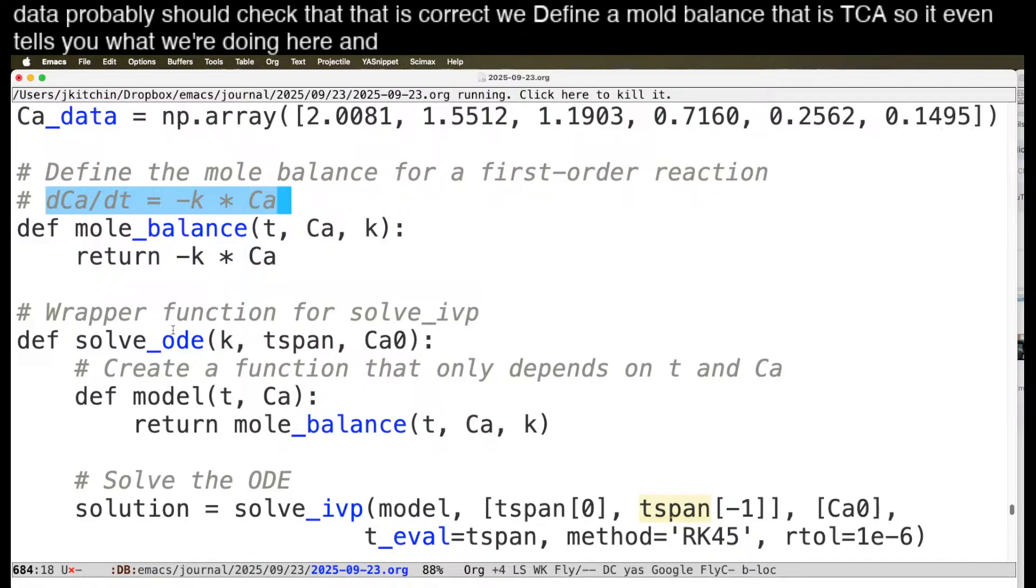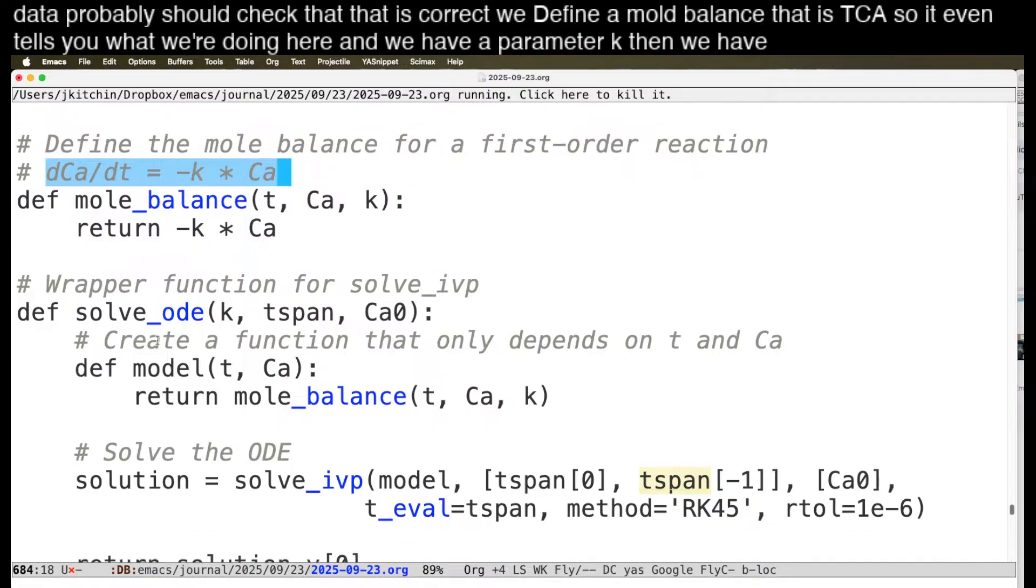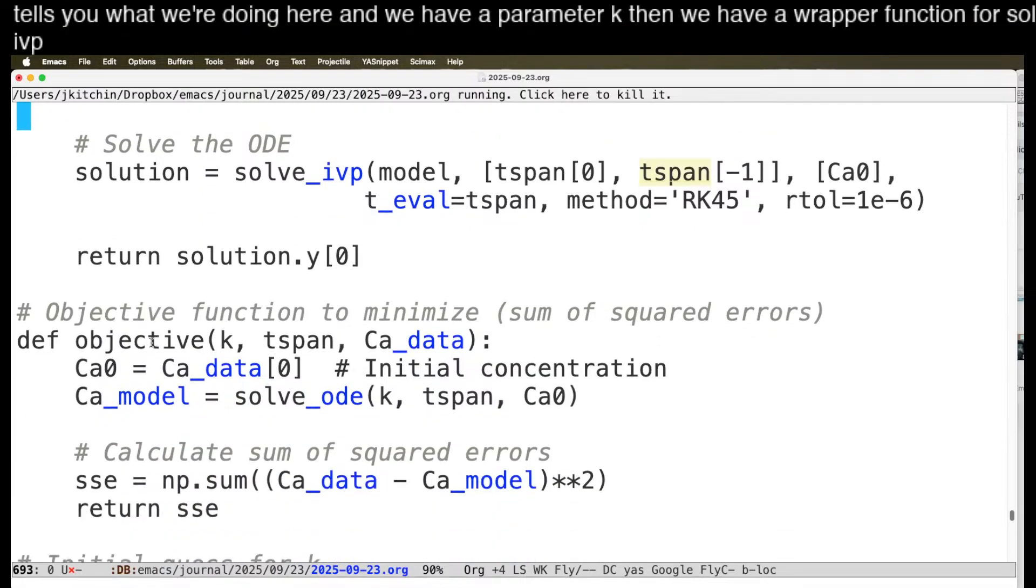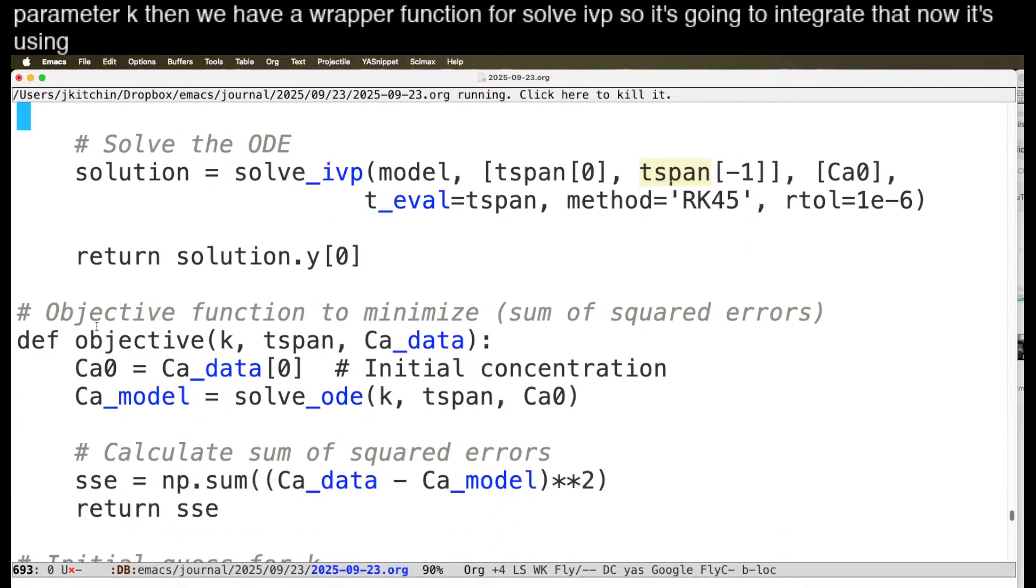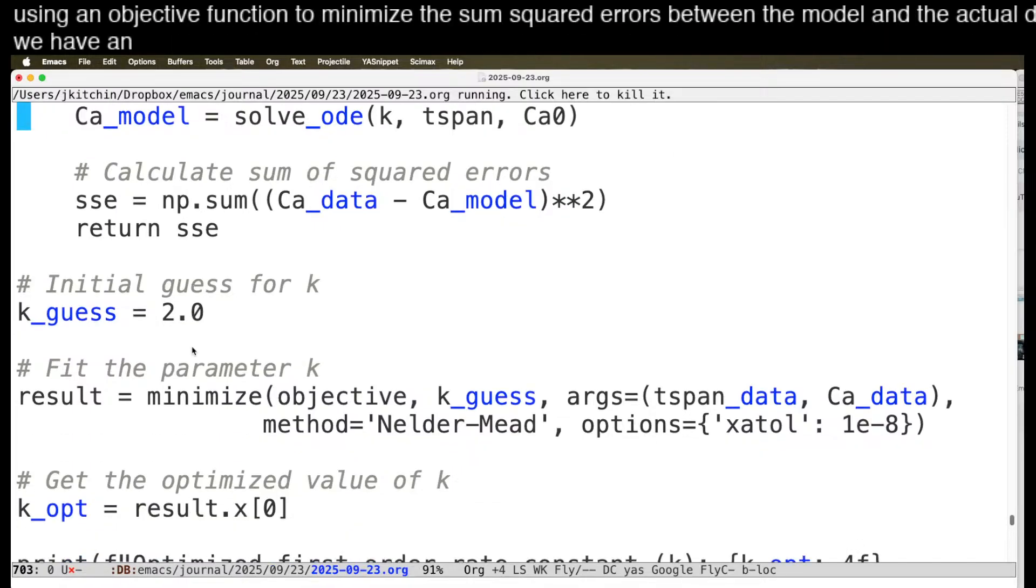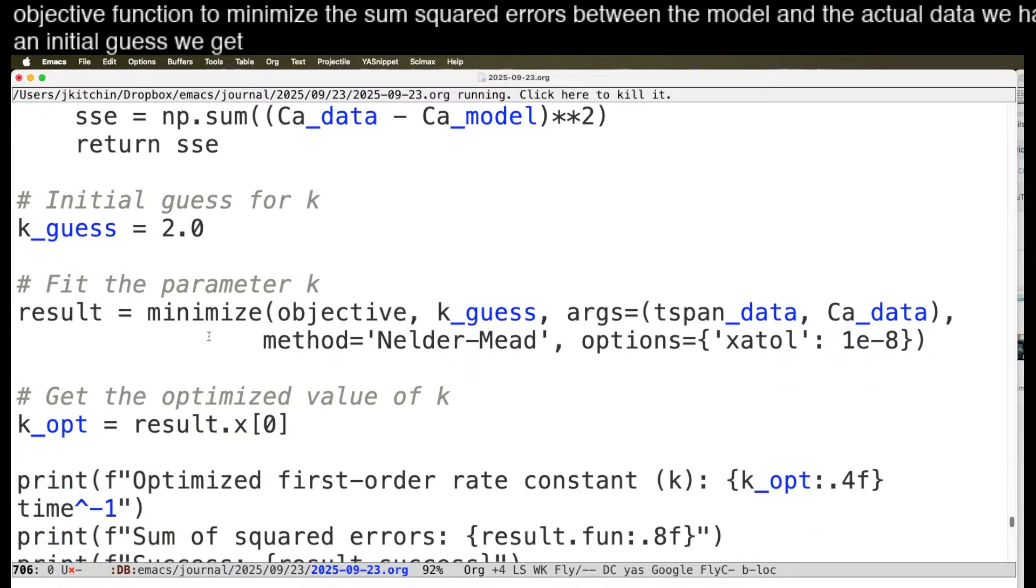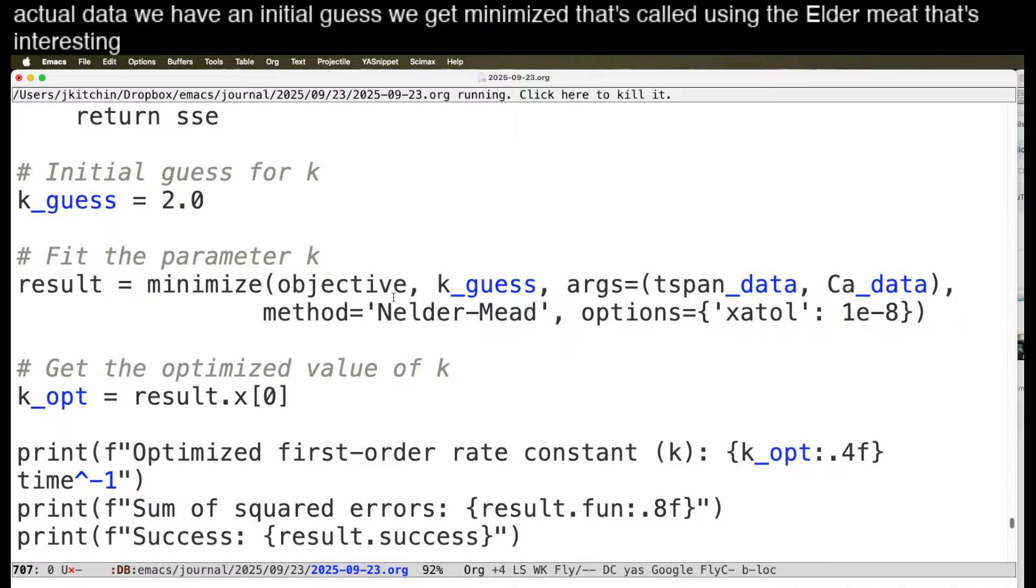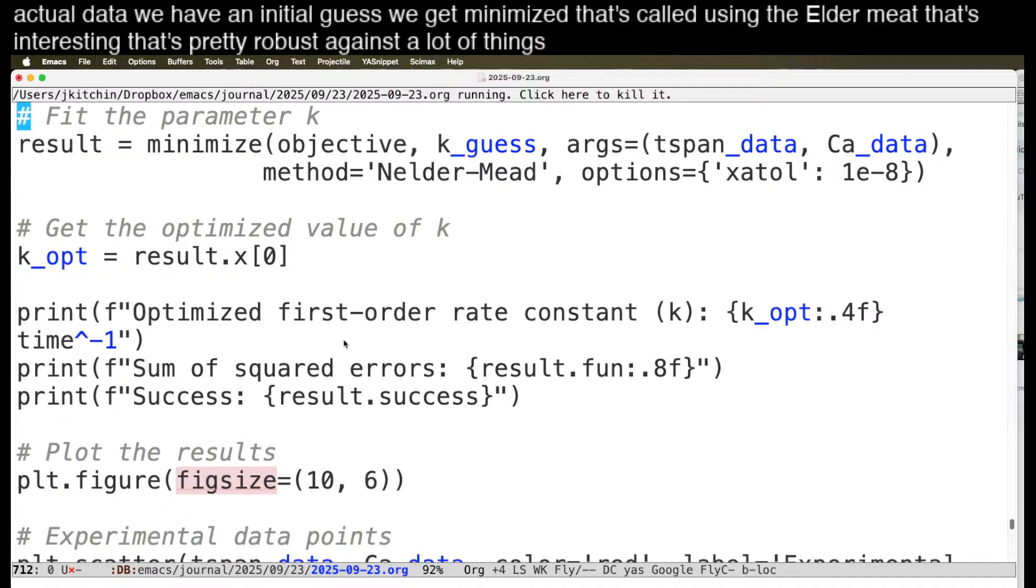Then we have a wrapper function for solveivp. So it's going to integrate that. Now it's using an objective function to minimize the sum squared errors between the model and the actual data. We have an initial guess. We get minimize. That's called using neldermede. That's interesting. That's pretty robust against a lot of things.